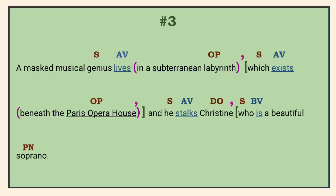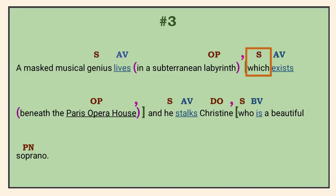Number 3. 'In a subterranean labyrinth' is adverbial, telling where he lives. Its object is modified by the relative clause beginning with the pronoun WHICH. This clause is non-restrictive, adding extra but non-essential information about the labyrinth. If you're not sure, look at the use of the indefinite article A — it could be any labyrinth. Therefore, commas on both sides of this dependent clause.